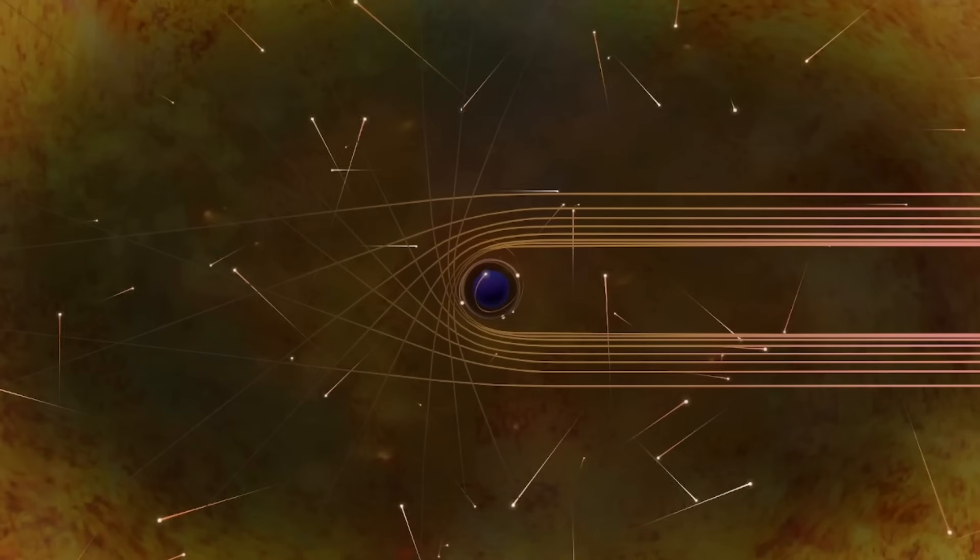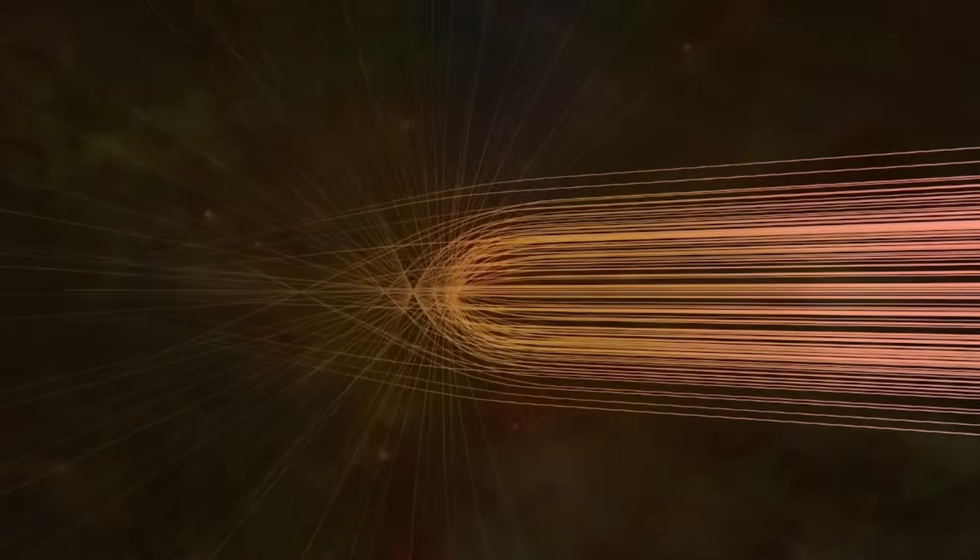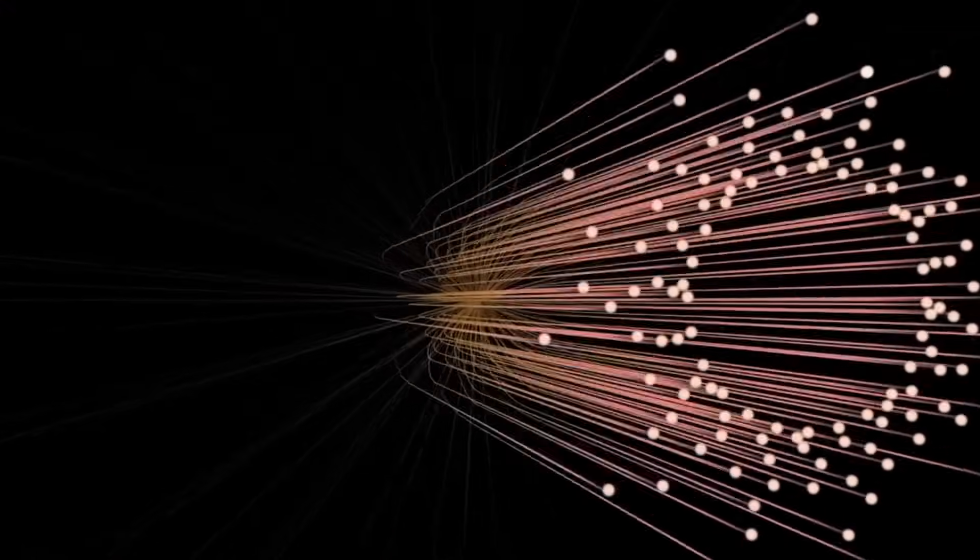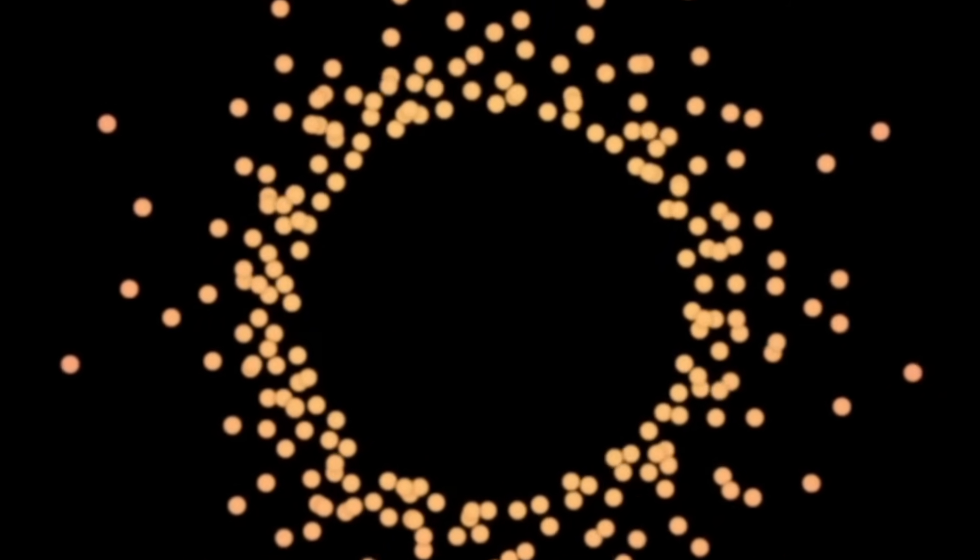So they scaled the model. They fed the quantum AI data from several black holes, each pulled from real observations by the Event Horizon Telescope and Chandra X-ray Observatory. Different masses, different spins, different galactic contexts. They expected noise, randomness, chaos.